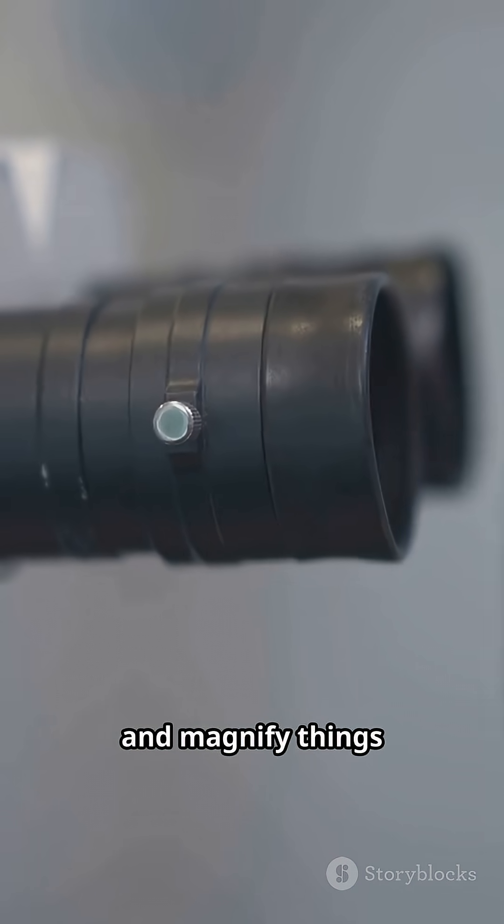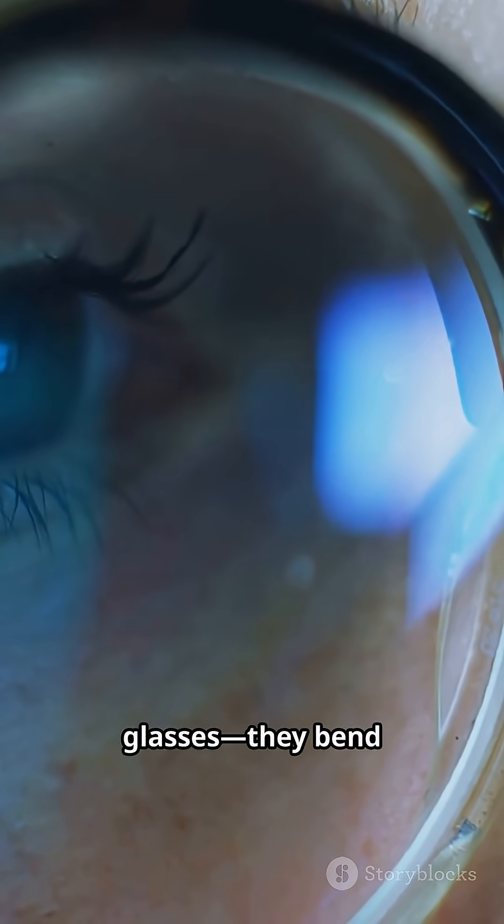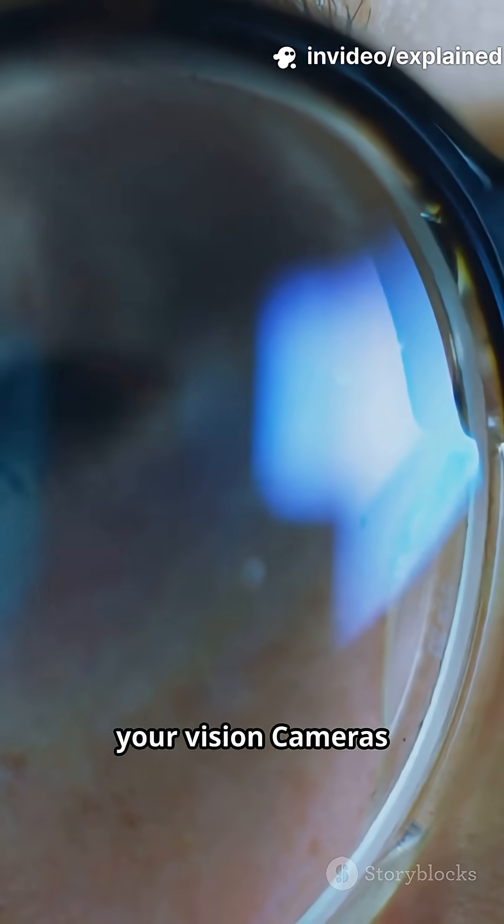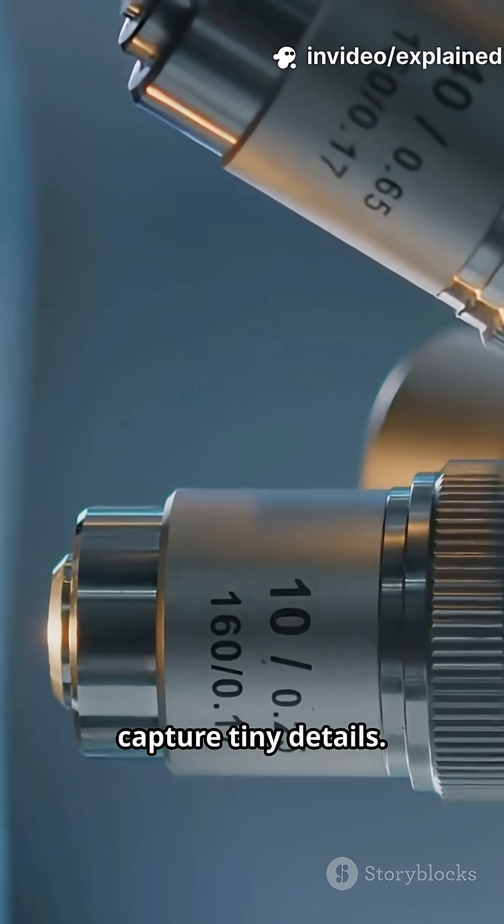Microscopes use lenses to bend light and magnify things. Just like glasses, they bend light to sharpen your vision. Cameras use lenses too to capture tiny details.